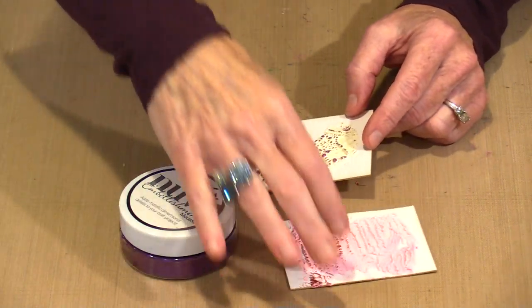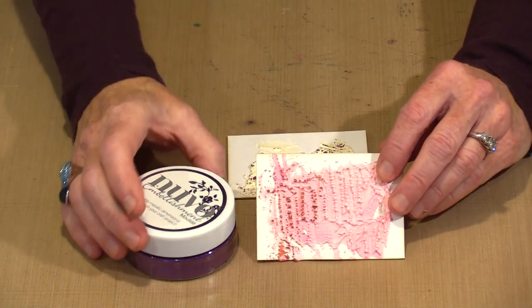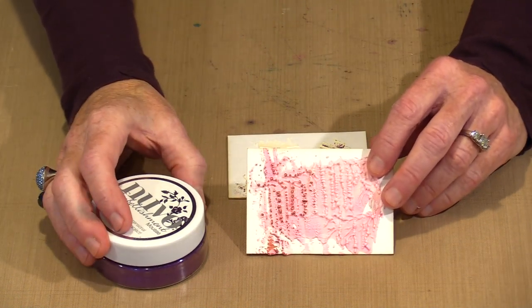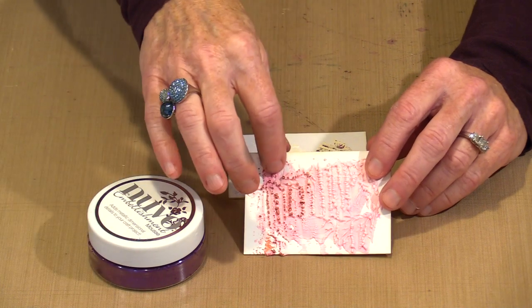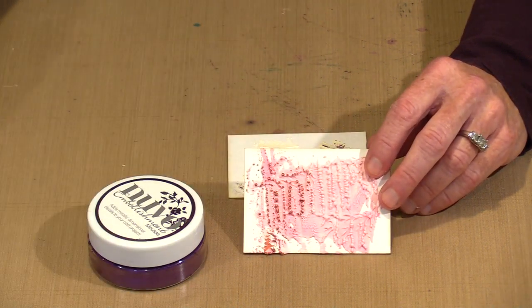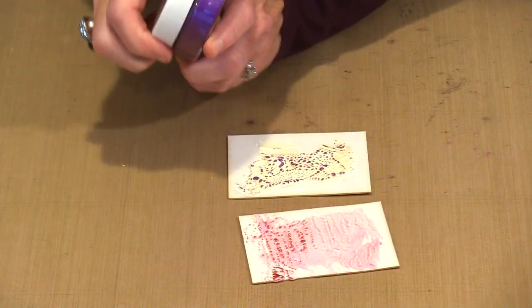Now, earlier I said that you can in fact tint this. You should probably not add any more than maybe 10 or 12 percent of whatever you are adding to tint the color to your lava paste. But you can certainly get some cool color that way.